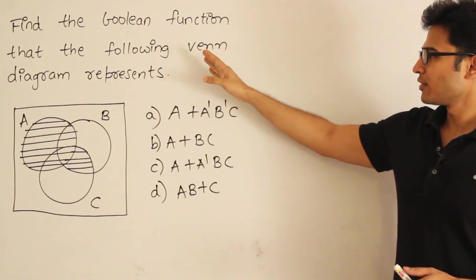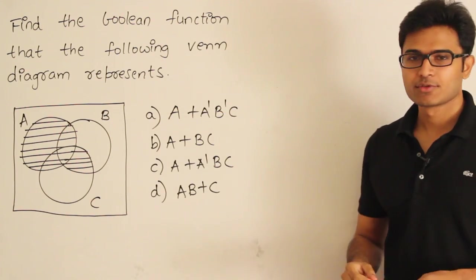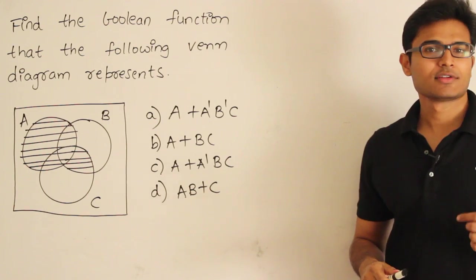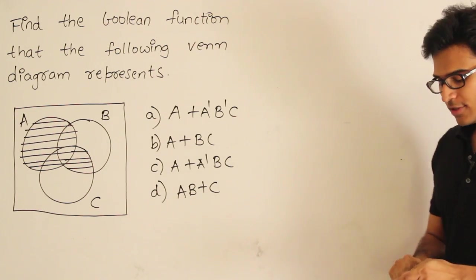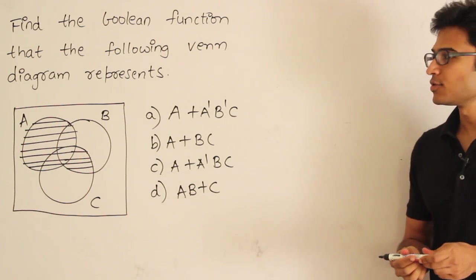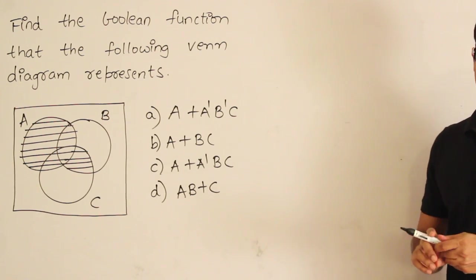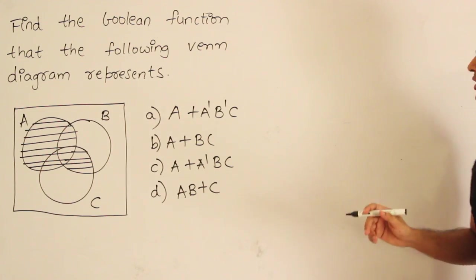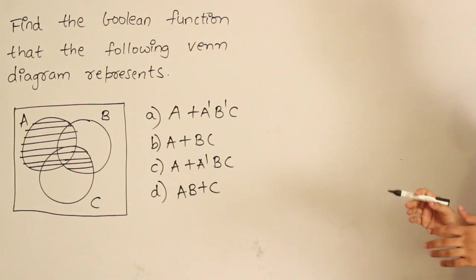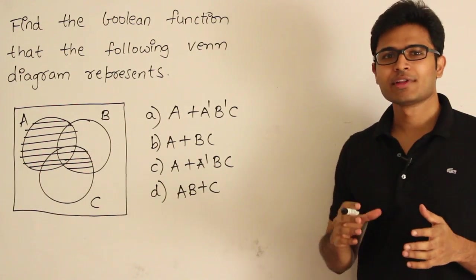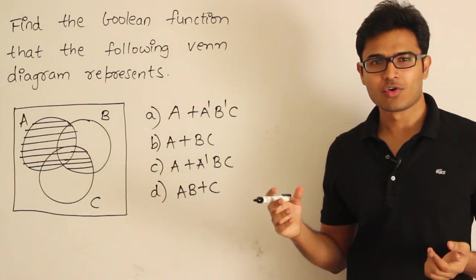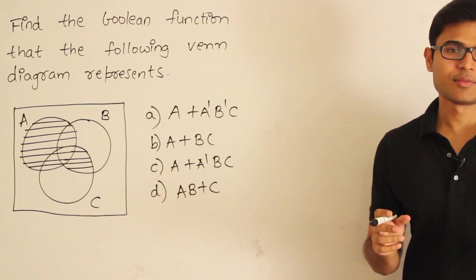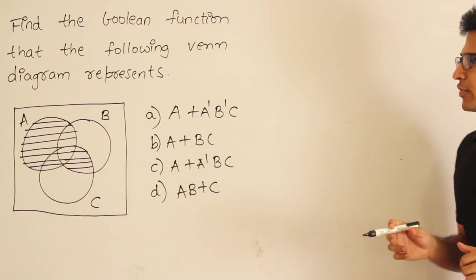Find the Boolean functions that the following diagram represents. There are various ways to represent Boolean functions. One way is using a Venn diagram. I will tell you how the Venn diagram works and then solve the question. Assume we have 3 Boolean variables. However, this method is not scalable — if you have more than 3 or 4 variables, it becomes difficult.